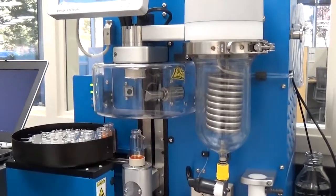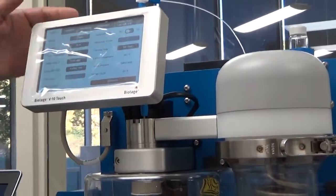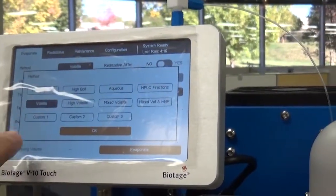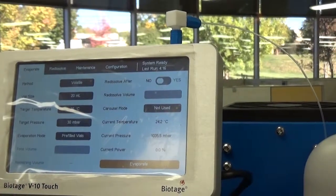So what we do, you just simply set the vial there. Make sure you get to the main screen of the V10 touch. You press volatile, or the method, and just make sure volatile is selected. It was already selected on this one.